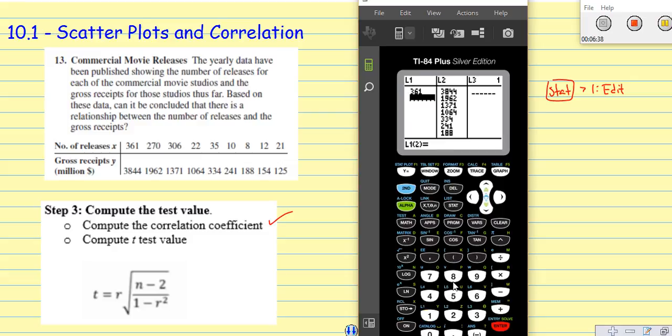Then at that point, you just start typing them back in. 361 enter, 270 enter, 306 enter, et cetera. So I'm going to hit pause, get those placed back in. You go ahead and hit pause on the video and get your numbers into your calculator.